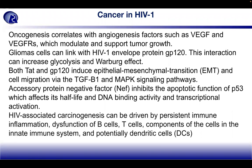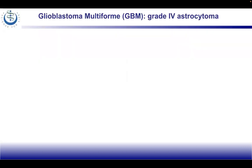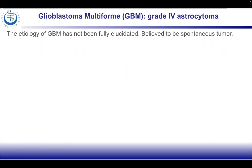There is also persistent immune inflammation in HIV-associated carcinogenesis, with dysfunction of B cells, T cells, and components of the innate immune system, potentially including dendritic cells.